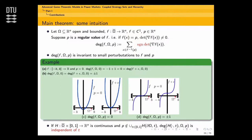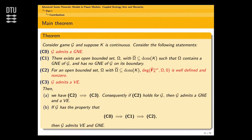Let me give you the result — I am not going to prove it here. Suppose you consider game G and K is a continuous map. There are four conditions C0 through C3. C1 is that the original game admits a GNE. C2 is that the degree of the GNE map is well defined and non-zero, which means a GNE exists. C3 is that G admits a VE. What we prove is that C2 implies C3: if a GNE exists, a VE exists. Consequently, if C2 holds for G, then G admits both a GNE and a VE.